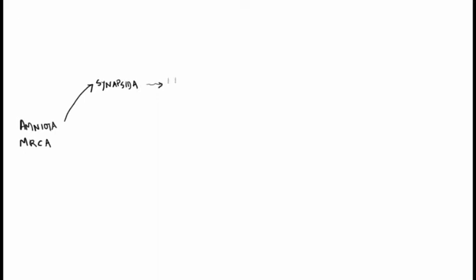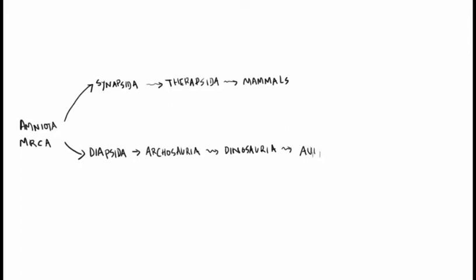From the previous lecture, the amniote most recent common ancestor had two lineages: the synapsids, which gave rise to the therapsida and eventually to the mammals, and the diapsida, which includes many kinds of organisms including the archosauria. Archosaurs include several groups, one of which are the dinosaurs and their modern representatives, the birds or aves.